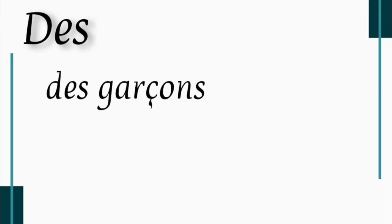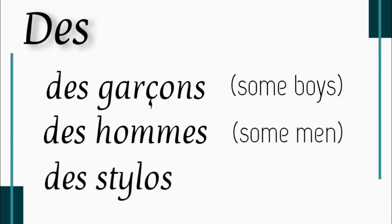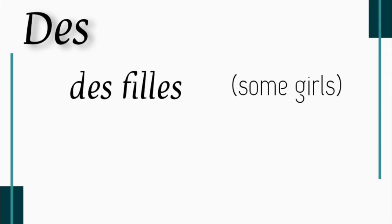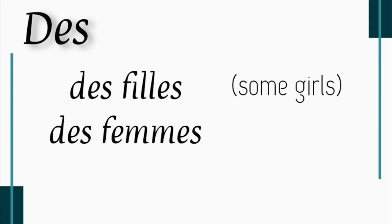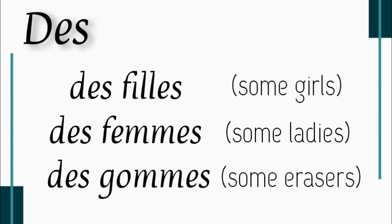Let's see how to use des. Des is used with plural nouns. Des garçons means some boys. Des hommes — some men. Des stylos — some pens. Des filles — some girls. Des femmes — some ladies. Des gommes — some erasers. Des can be literally translated in English as 'some.' I hope this is clear. Un and une are used with singular nouns; des is used with plural nouns.